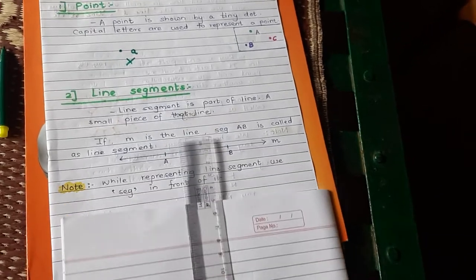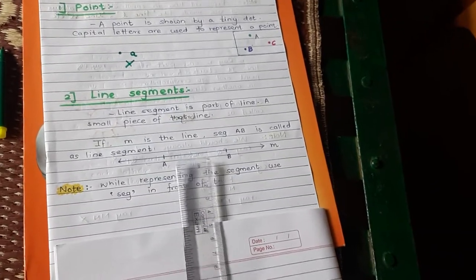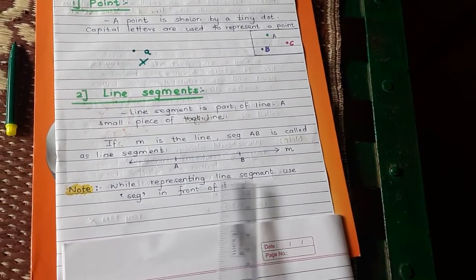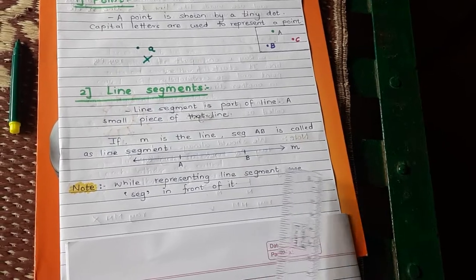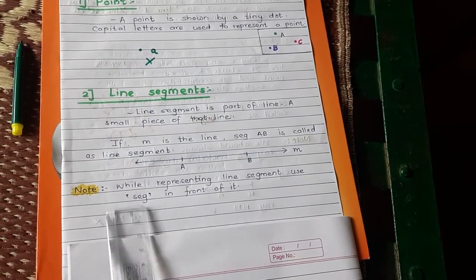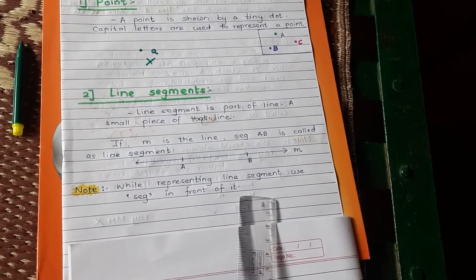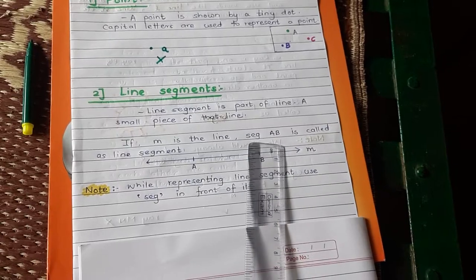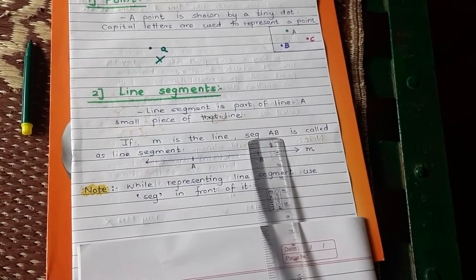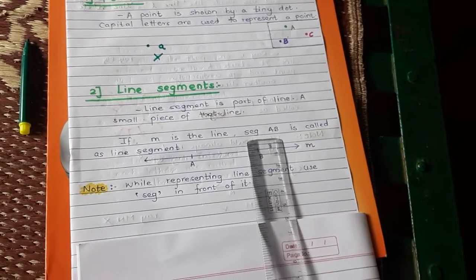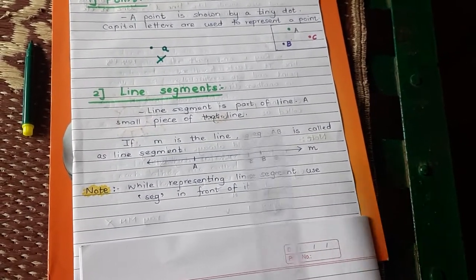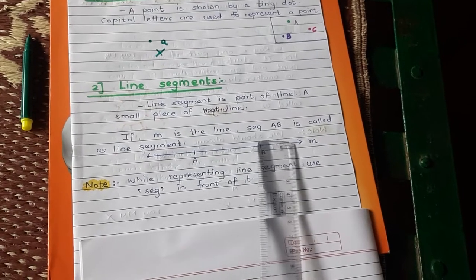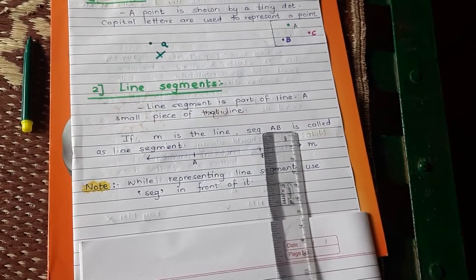There is one note for you: while representing a line segment, use the word 'segment' in front of it. You are supposed to write 'segment AB', not only 'AB'. You are supposed to write 'segment AB'. Is that clear?